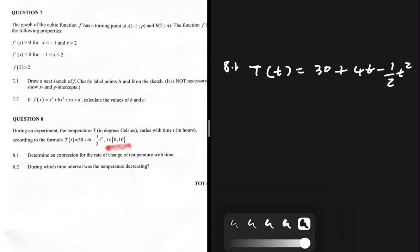If you're given an equation, how do you find the rate of change? You differentiate once. So for our answer to 8.1, we have the first derivative of T. If you differentiate 30, that is just 0. If you differentiate 4t, that will just be 4. And then we differentiate minus one-half t squared: minus one-half multiplied by 2 is minus 1, and t to the 2 minus 1 is just t.